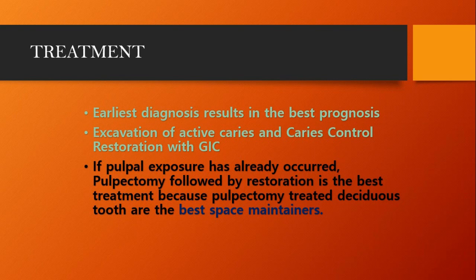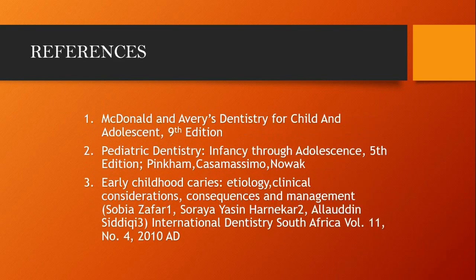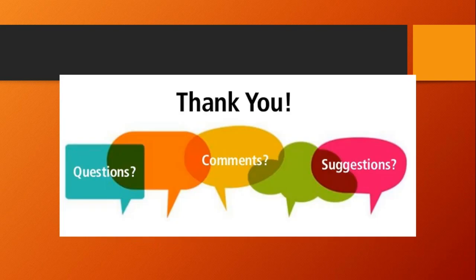Early diagnosis results in the best prognosis. Whenever you see any cervical lesion, you need to educate the parents — they can monitor at home. Excavation of active caries and caries control restoration with GIC should be done when early childhood caries is diagnosed. If pulpal exposure has already occurred, pulpectomy followed by restoration is the best treatment, because pulpectomy-treated deciduous teeth are the best space maintainers — rather than extracting and placing space maintainers, pulpectomized primary teeth are the best space maintainers.